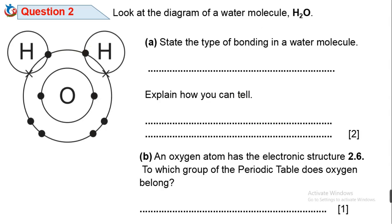Question 2: Look at the diagram of a water molecule H₂O. Question 2a: State the type of bonding in a water molecule. The round shaded circles are electrons of oxygen, while the crosses are electrons of hydrogen — one cross for each hydrogen. Observing this chemical bonding between hydrogen and oxygen, there is no transfer of electrons; they share their electrons. The chemical bonding that involves sharing of electrons is called covalent bonding.